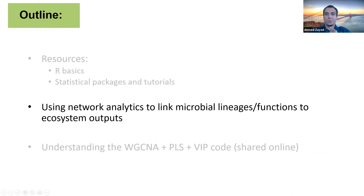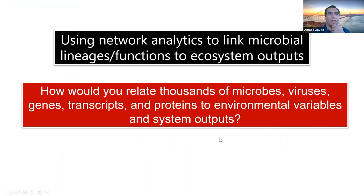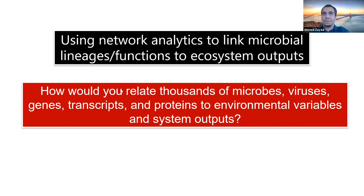Now we're going to start talking about networks and how to use them to link your microbial lineages or viral lineages, your genes, your transcripts and proteins to ecosystem outputs. This is because we have a lot of these in our data sets — the scale of the data increases a lot with advances in technology. It's not uncommon now to see 1,000-plus data sets across different samples, across time, across space. You can even see hundreds of thousands of viruses, millions of transcripts and proteins. All of these are now under your hands and you want to understand what potentially they can be doing to the ecosystem.